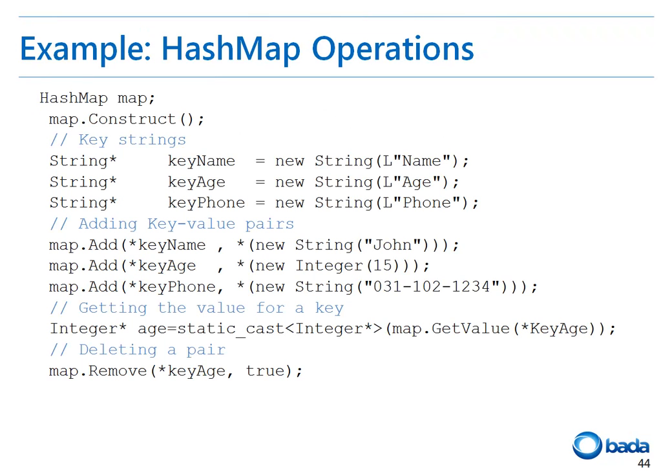This example shows how to use the HashMap. First, three keys — name, age, and phone — are prepared as strings. A key-name and string 'John' pair, a key-age and integer 15 pair, and a key-phone and phone number string pair are added to the map. To get the value of age from the map, the getValue function is called passing the string 'age', then the value is cast to an integer pointer. This example also shows how a value corresponding to a specified key can be deleted from the map.